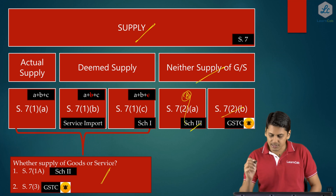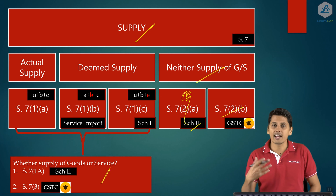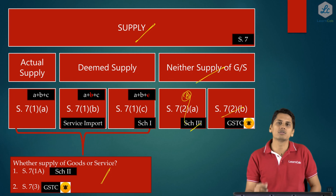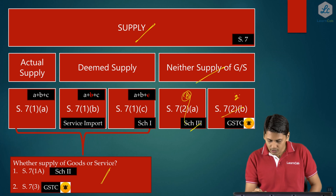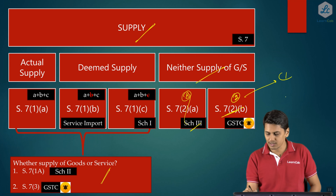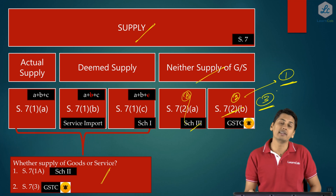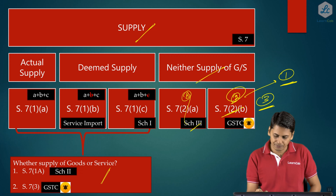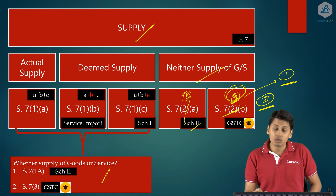Section 7, Subsection 2, Clause B states that the GST Council can recommend certain activities to be neither a Supply of Goods nor a Supply of Services, and the government will notify those activities accordingly. So far there were two such notified activities. Now there is an additional activity, totaling three. Let us have a brief recap of the two existing activities before moving to the third.